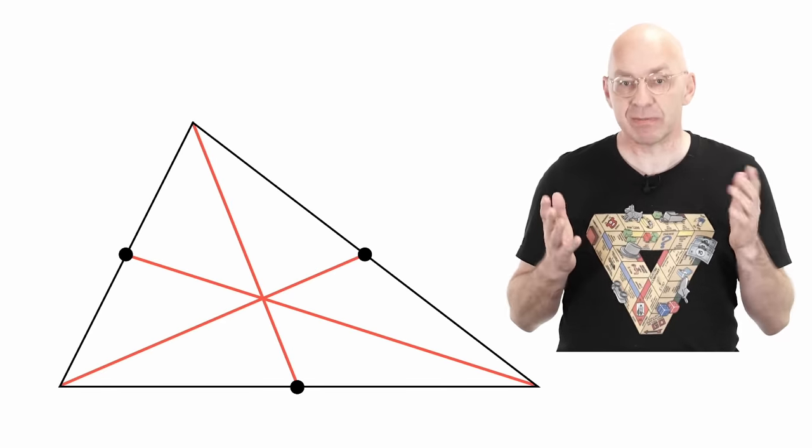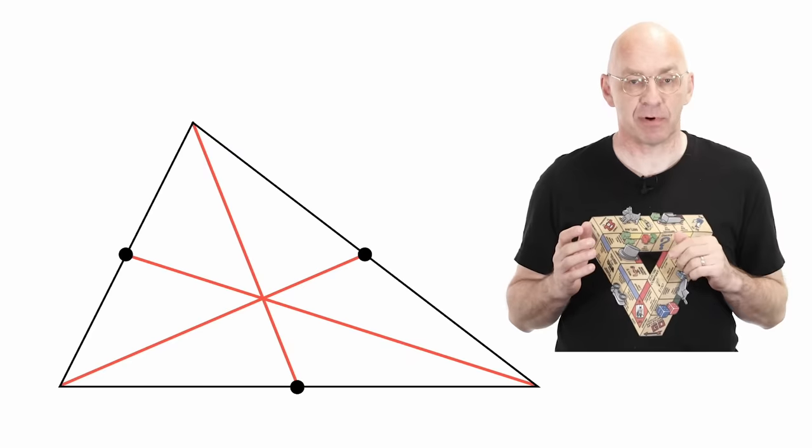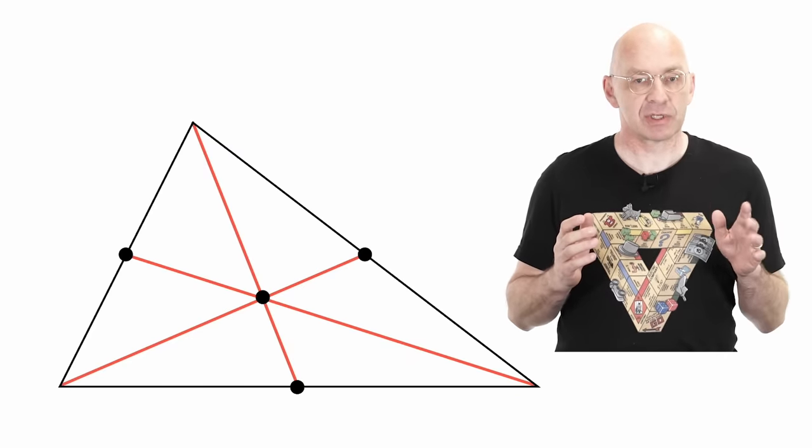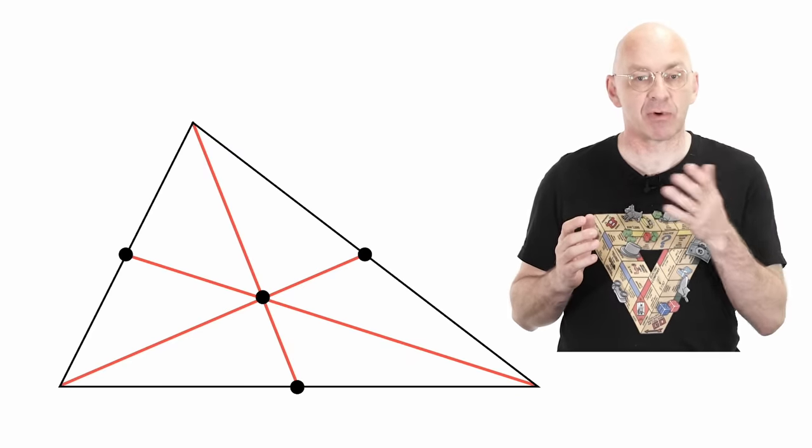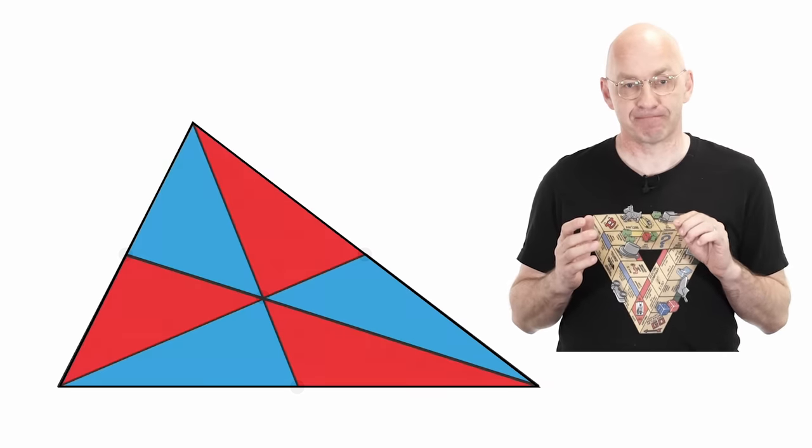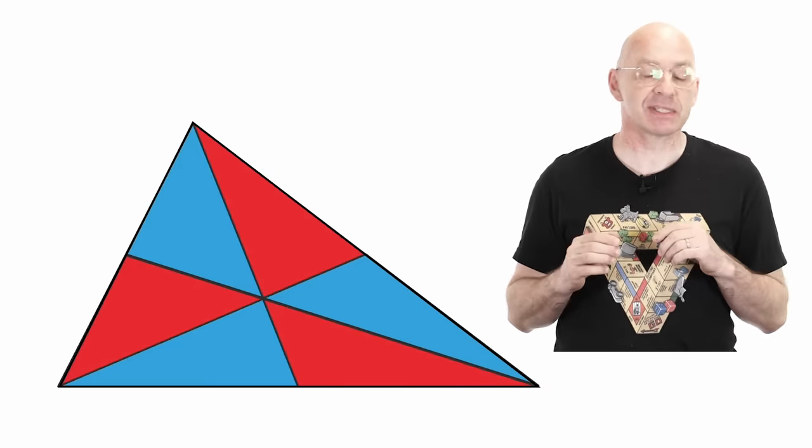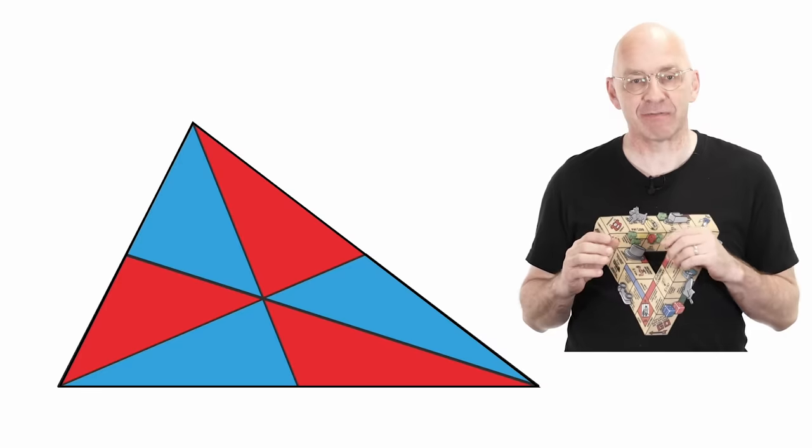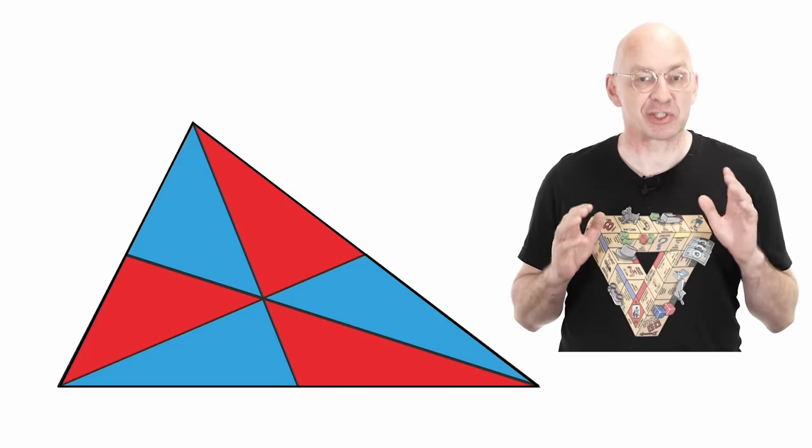And look at this. The three medians always intersect in a point. And so the medians chop the triangle into six smaller triangles, usually all different in shape and size. This fact has been known since time immemorial and mathematicians have been staring at this diagram for just as long. Now,